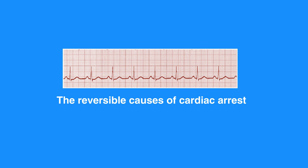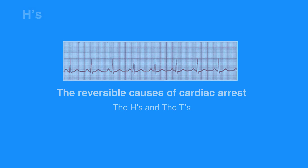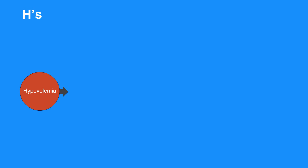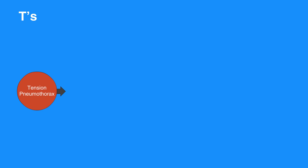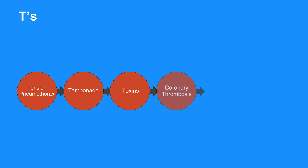The reversible causes of cardiac arrest are the H's and the T's. The H's include hypovolemia, hypoxia, H+ or acidosis, hypo and hyperkalemia, hypoglycemia, and hypothermia. The T's include tension pneumothorax, tamponade, toxins, coronary thrombosis, pulmonary thrombosis, and unrecognized trauma.